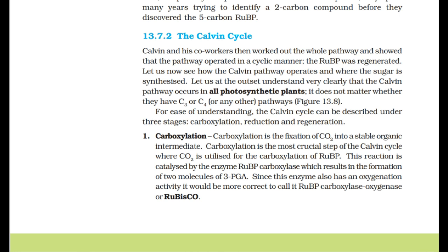The Calvin cycle: Calvin and his co-workers showed that the pathway operated in a cyclic manner and that RuBP was regenerated. The Calvin pathway occurs in all photosynthetic plants, whether they have C3 or C4 or any other pathways. The Calvin cycle can be described under three stages: carboxylation, reduction, and regeneration.